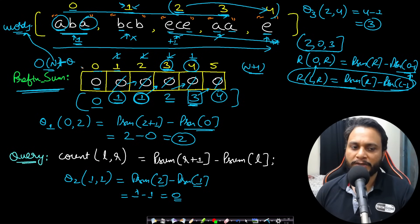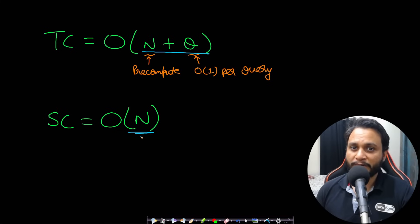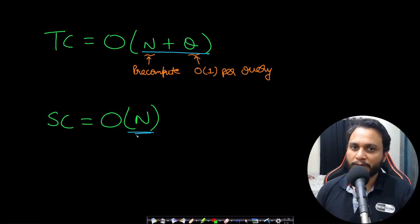The precomputation of the prefix sum visits all n words and checks only the first and last character in O(1) each, so precomputation is O(n). Each query is then answered in O(1) using the prefix sum array. Total time complexity is O(n + q) and space complexity is O(n) for the prefix sum array.